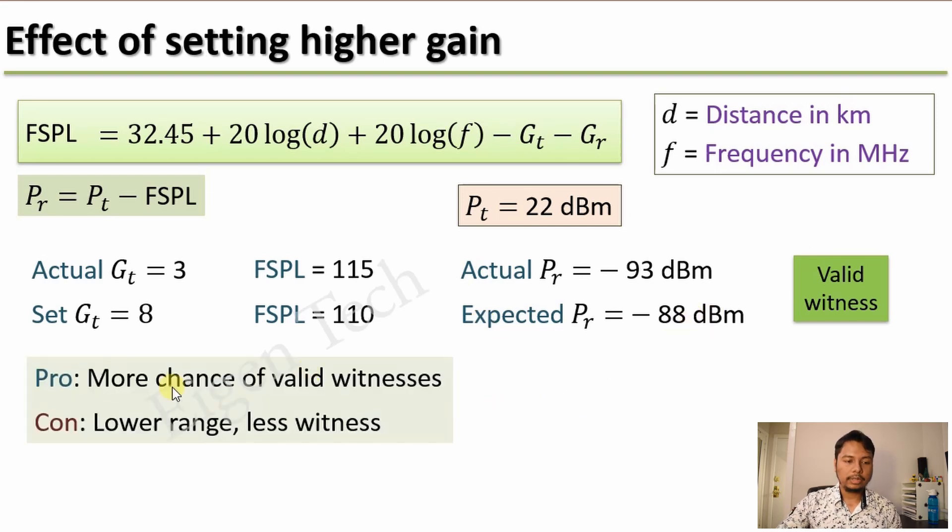There is no problem in setting a gain which is higher than the actual value. The pro is that you have more chance of getting valid witnesses. In particular, it will be useful for close-by hotspots. However, the con is you will have lower range because now the transmitted power will be lowered depending on the value of the gain, and it will have as a result less witnesses. So you can see in both cases when you set the gain value to be higher or lower than the actual value, you have problems.